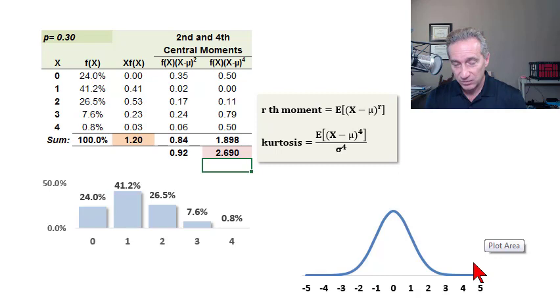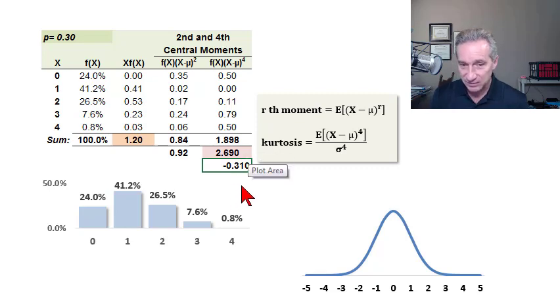And we often compare this to the normal such that it's common to take the kurtosis and subtract three to get the excess kurtosis. So that the normal distribution, my standard normal here has by definition, an excess kurtosis of 0, and my binomial here has an excess kurtosis of negative 0.3, meaning just less than 0.